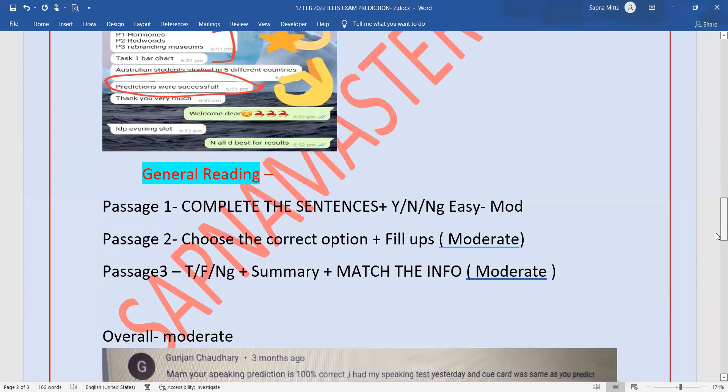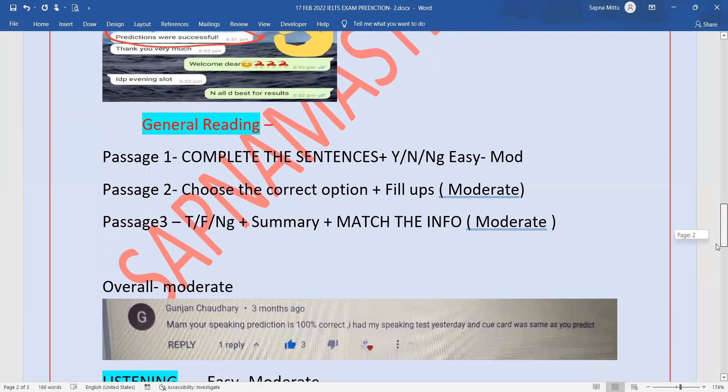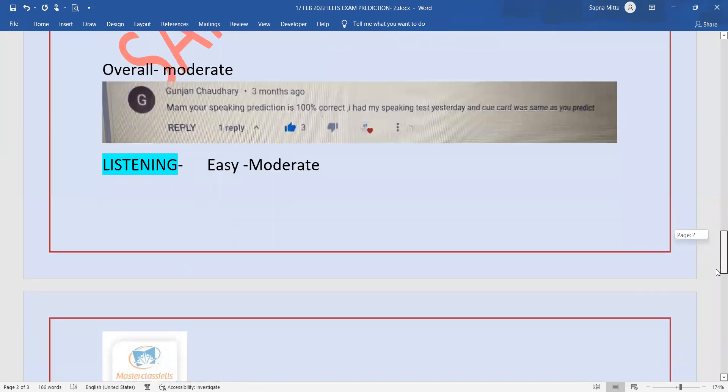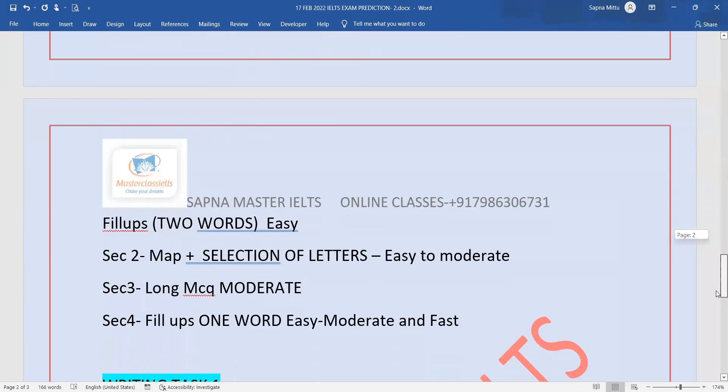Listening: easy to moderate because it can be faster. The first section will be fillups where the questions could be two words or a number. Section 2 can be a map plus selection of letters, which is quite important—do this carefully. Easy to moderate.